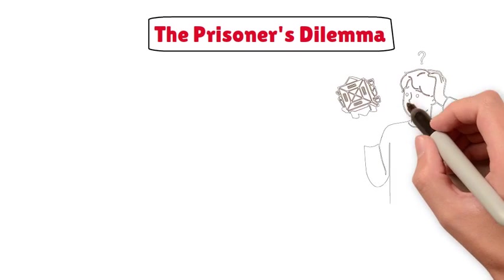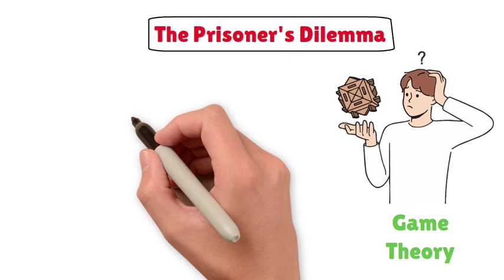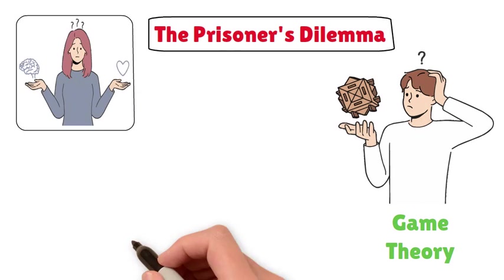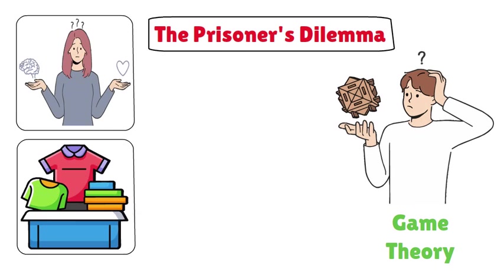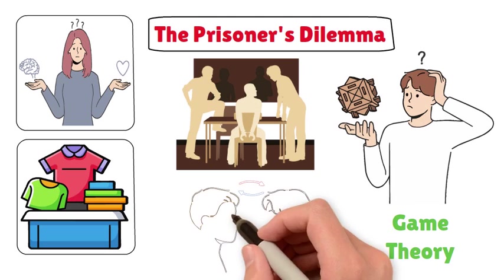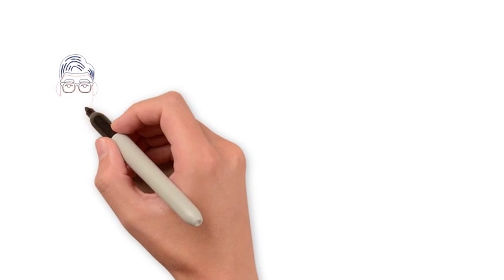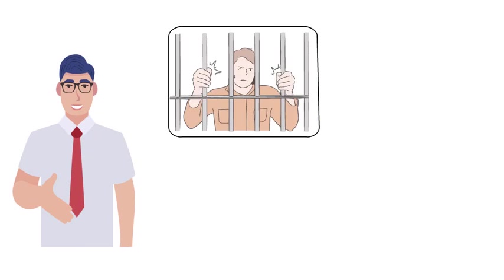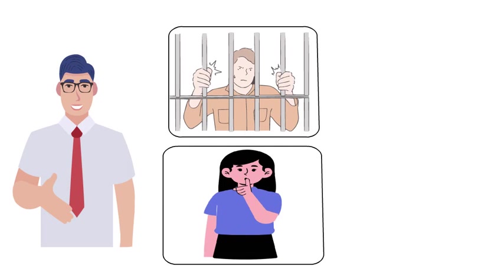The Prisoner's Dilemma is a captivating thought experiment in game theory, illustrating the tension between individual rationality and collective benefit. Imagine two suspects are apprehended for a crime, isolated from each other, and offered a deal: Confess and implicate the other to receive a reduced sentence or remain silent.